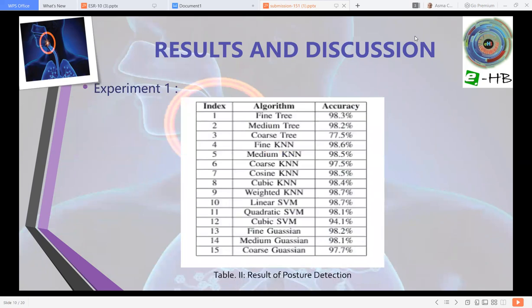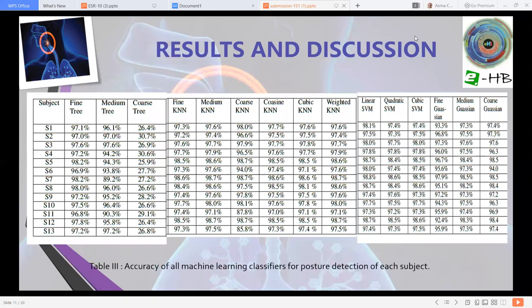The results we achieved for experiment number one, in which different supervised machine learning algorithms were used. We found out that each algorithm gives very good accuracy, mostly in the 90s, and this table shows the accuracy of all machine learning classifiers for posture detection of each participant. Among these classifiers, weighted KNN and linear classifier gave promising results with an accuracy of 98.7%.